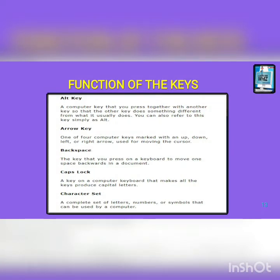Alt key, also known as alternate key. A computer key that you press together with another key so that the other key does something different from what it usually does. Arrow key: one of four computer keys marked with an up, down, left, or right arrow used for moving the cursor.